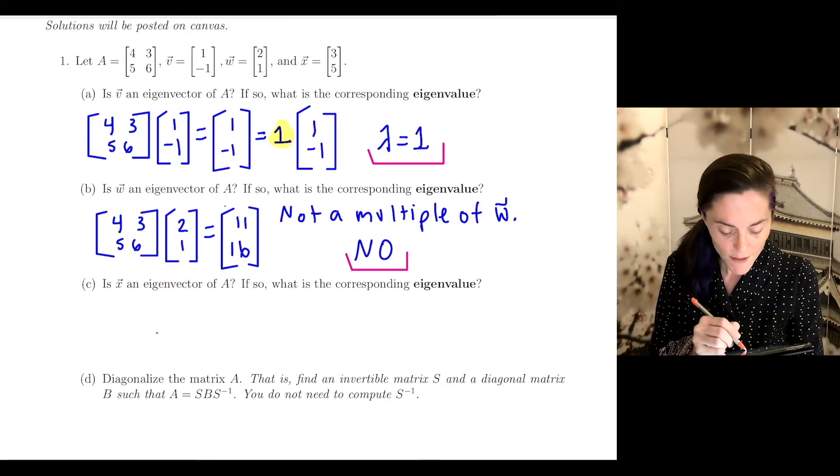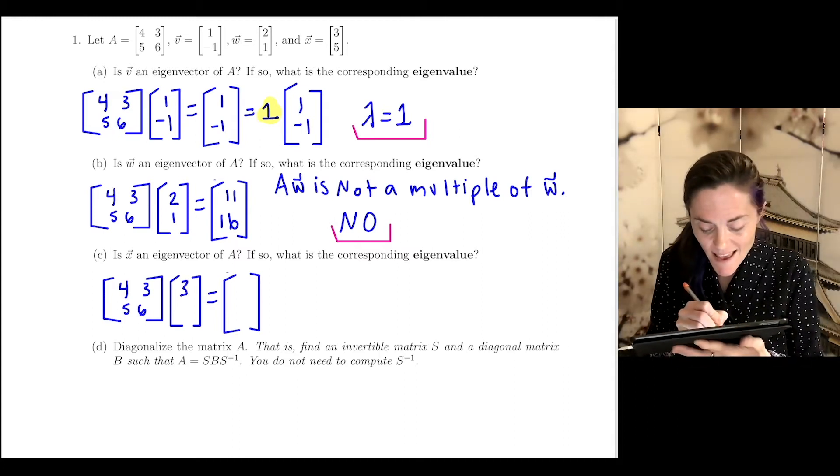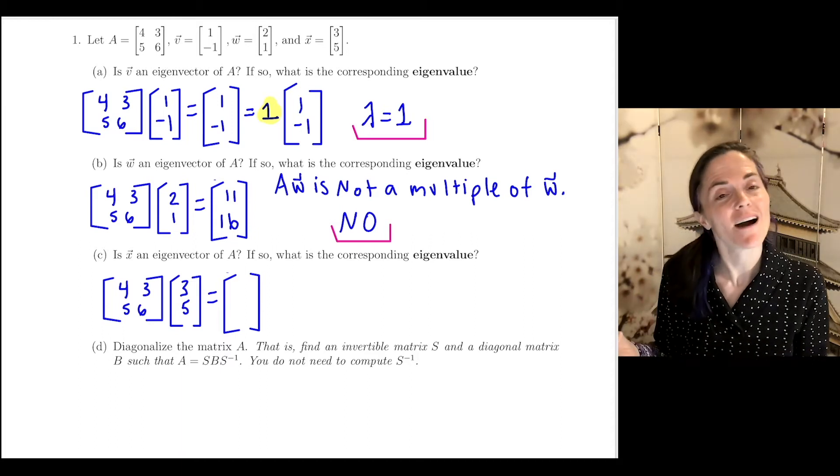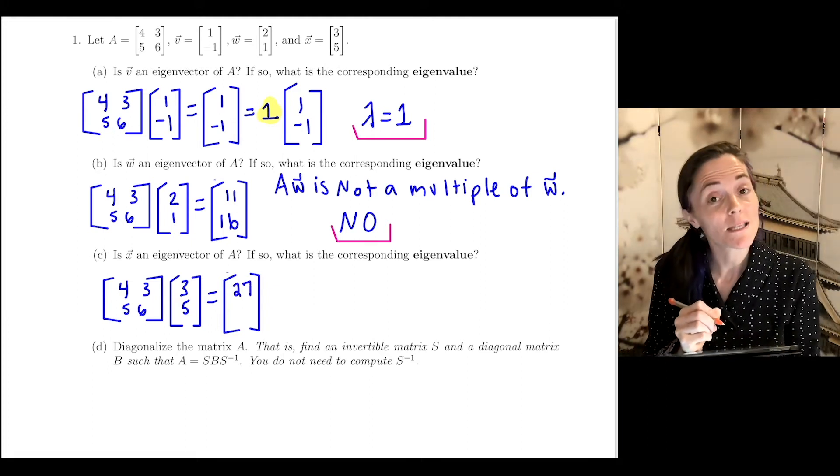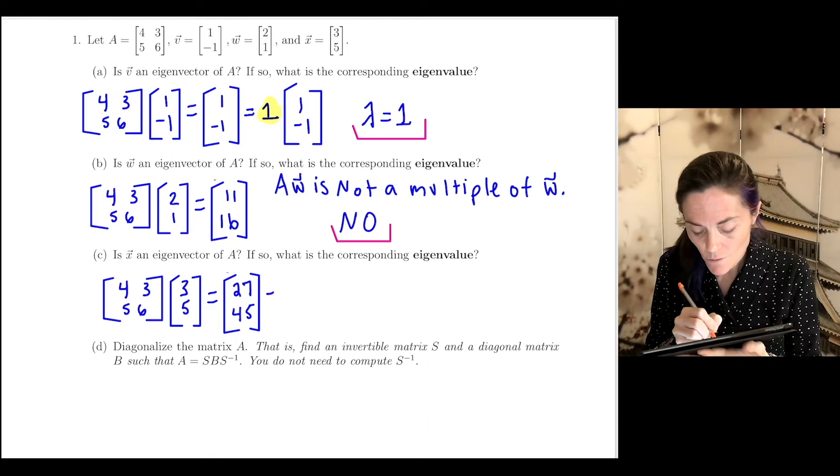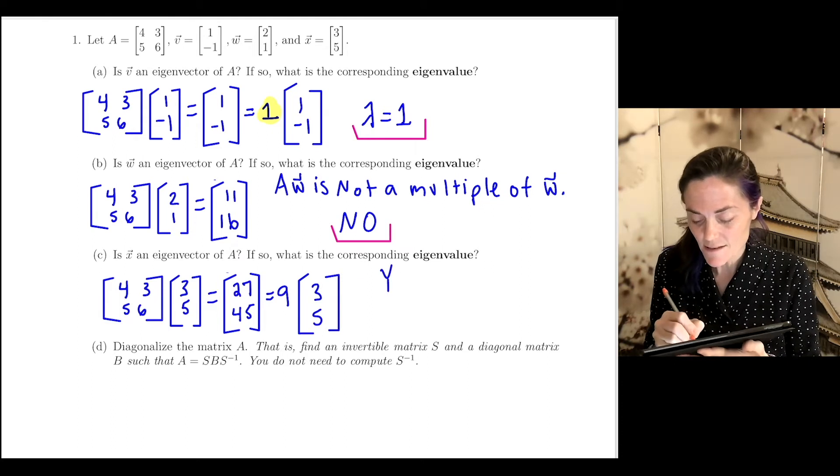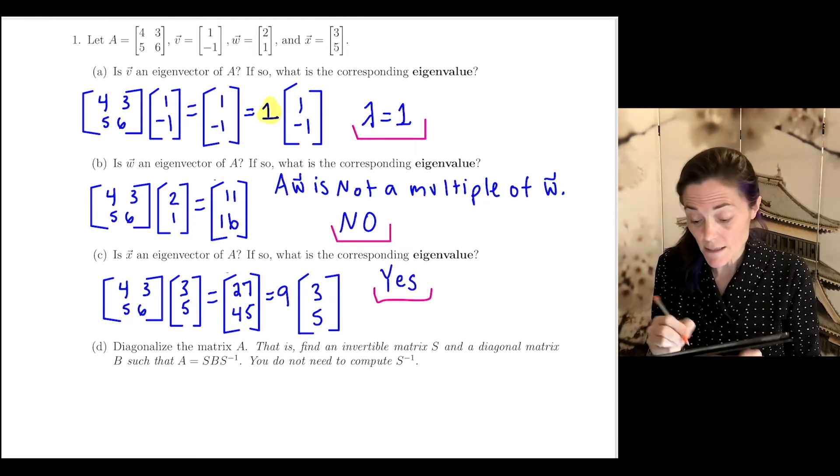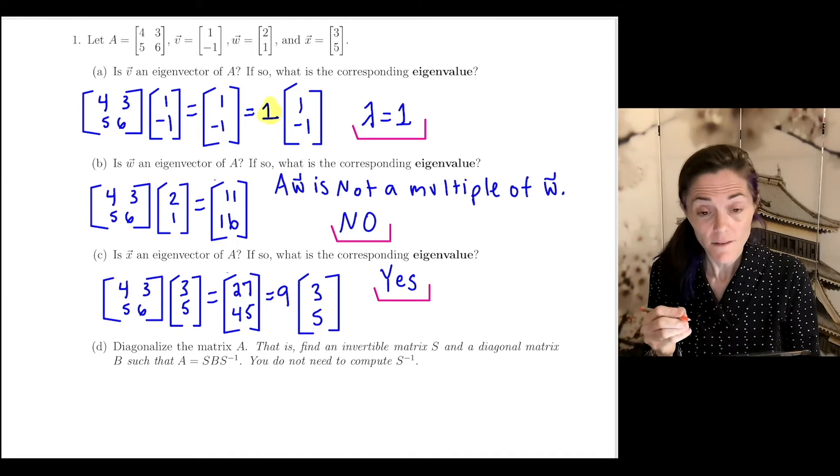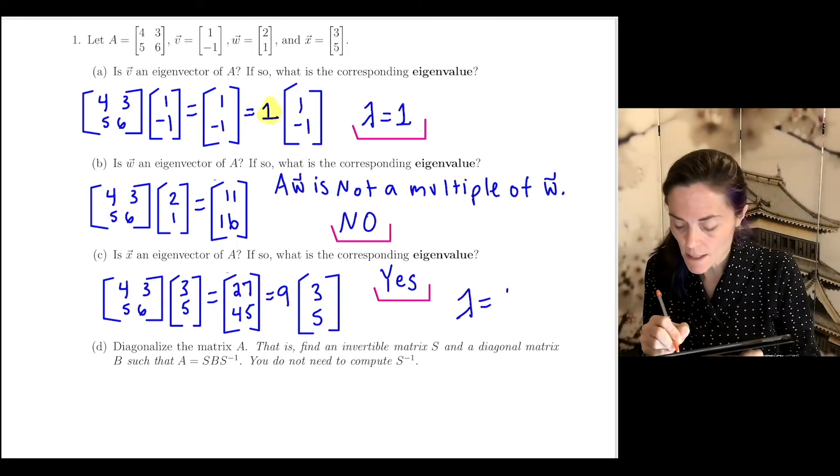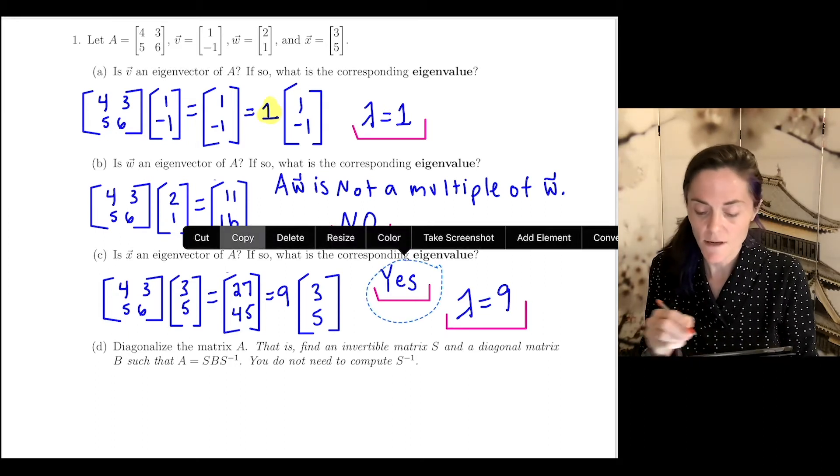Now letter C: is X an eigenvector of A? Let's multiply matrix A by vector (3, 5). We have 12 + 15 = 27, and 15 + 30 = 45. If you look at this, you realize this is 9 times the vector (3, 5). Yes, this vector X is an eigenvector for A because AX is a multiple of X, and we see the eigenvalue is lambda equals 9.